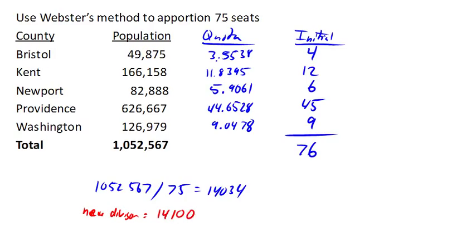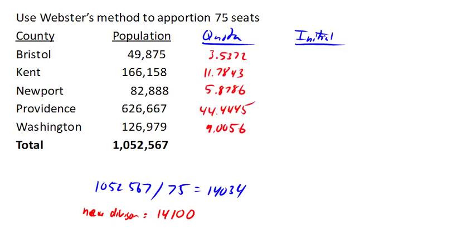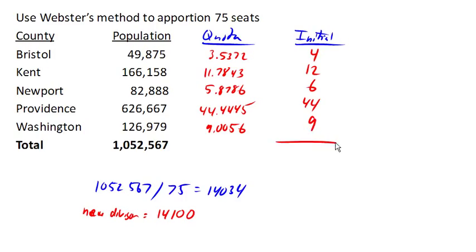That gives us a whole new set of quotas. Based on these new quotas, our initial allocation is 4, 12, 6, 44, and 9, and that adds up to the desired 75.